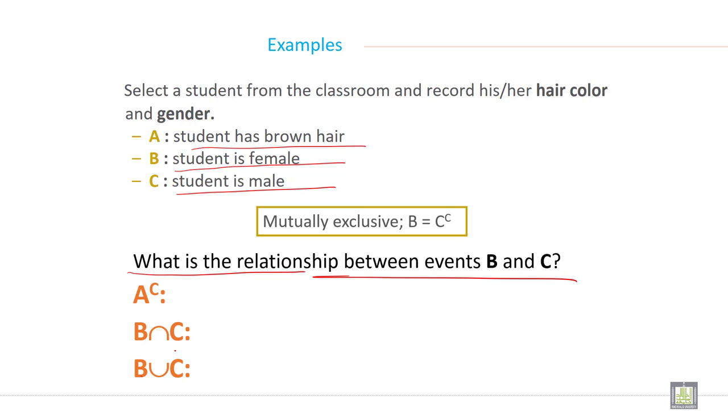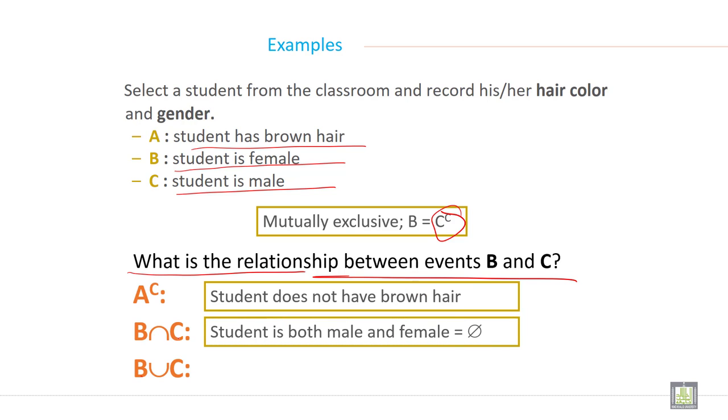Mutually exclusive: B equals C complement. A complement means a student does not have brown hair. B intersection C means a student is both male and female, both.